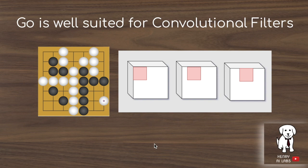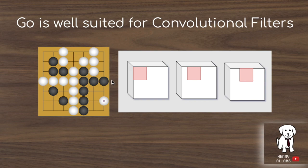One interesting characteristic of extending AlphaGoZero is that Go is well suited for convolutional filters. A small convolutional kernel slides across the board representation to extract local features, which works well for Go because the game revolves around local connectivity — enclosing territory by placing stones near each other. The game is very reliant on these local features to make sense of the board state.